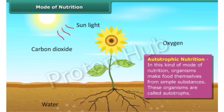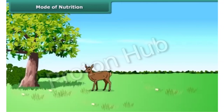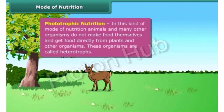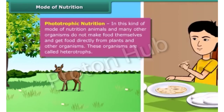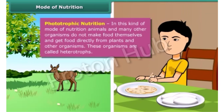Green plants are examples of autotrophs. The mode of nutrition in which animals and many other organisms take in ready-made food prepared by plants is called heterotrophic nutrition, and these organisms are called heterotrophs. Humans, lions, tigers, etc. are examples of heterotrophs.